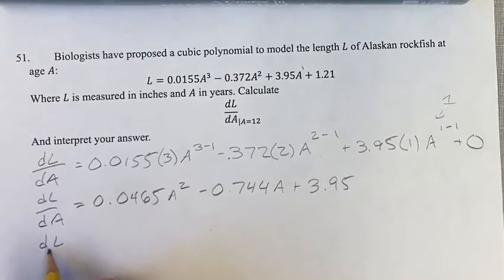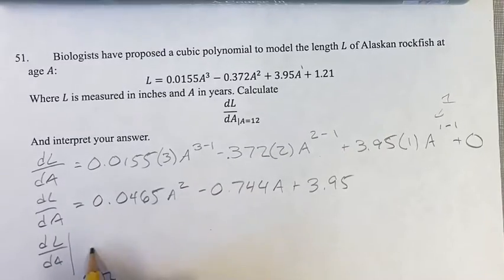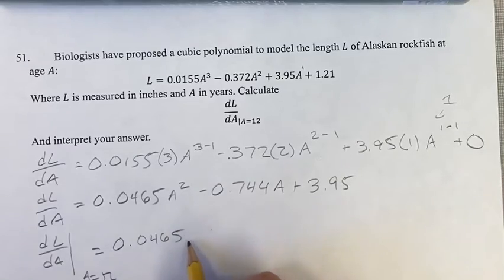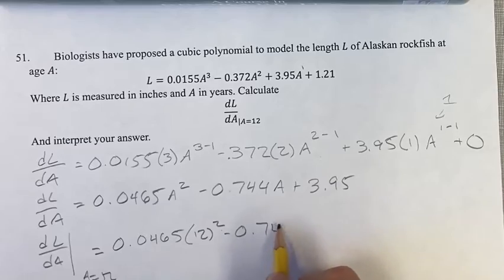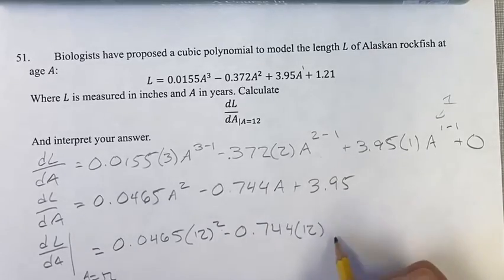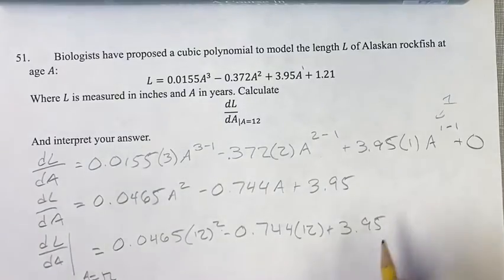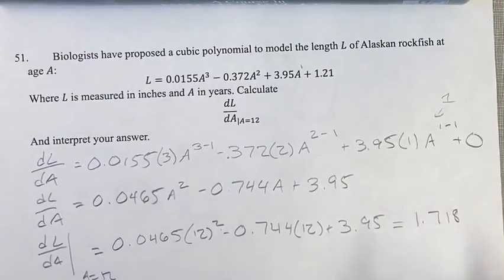Now, we want to evaluate it at A equals 12, and all we have to do for this is plug in 12 wherever we see A. So you have 0.0465 times 12 squared, minus 0.744 times 12, plus 3.95. And this value is going to turn out 1.718.